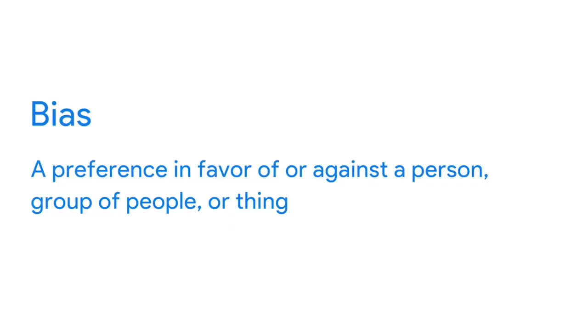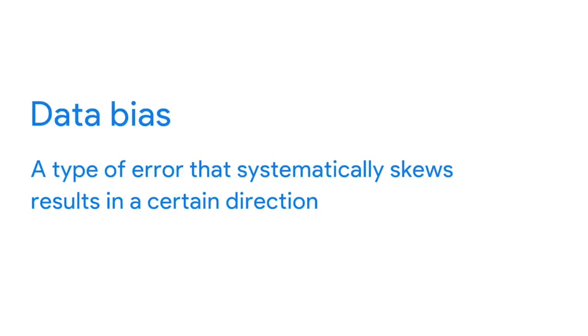The truth is we run into bias all the time in everyday life. Our brains are biologically designed to streamline thinking and make quick judgments. Bias has evolved to become a preference in favor of or against a person, group of people, or thing. And it can be conscious or subconscious. The good news is, once we know and accept that we have bias, we can start to recognize our own patterns of thinking and learn how to manage it. It's important to know that bias can also find its way into the world of data. Data bias is a type of error that systematically skews results in a certain direction.